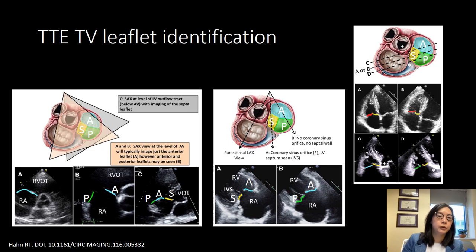These pictures, even though they're transthoracic, clearly demonstrate how to identify leaflets. In a short-axis inflow-outflow view, if you see a single tricuspid valve leaflet, then you are cutting through the anterior leaflet. If you tilt a little bit and see two leaflets in this view, you're cutting through the anterior and posterior leaflets. If you see three leaflets in the short-axis view and you see an LVOT, then you're actually going through the septal, the anterior, and the posterior leaflets.